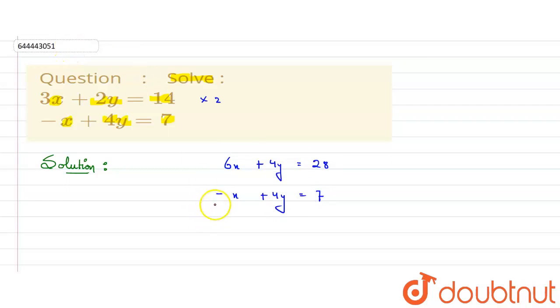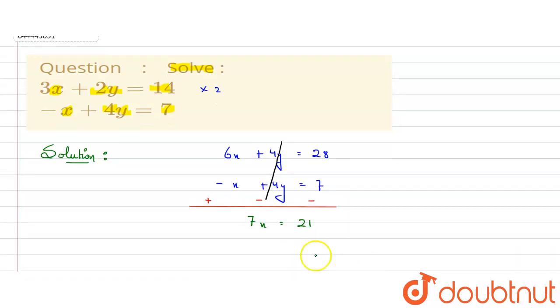Now if I subtract these two equations, the sign will get changed. Plus 4y and minus 4y will get cancelled. Then 6x plus x, this will be 7x equals 28 minus 7, which is 21. So from here, x will be equal to 21 upon 7.